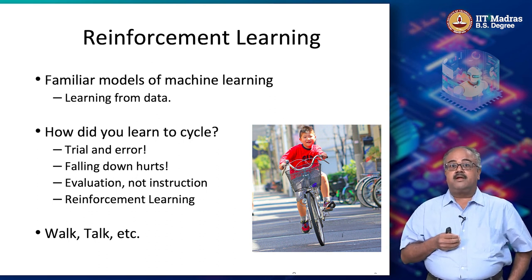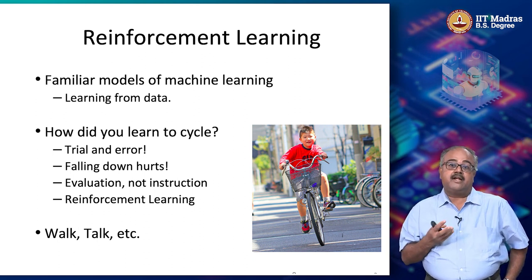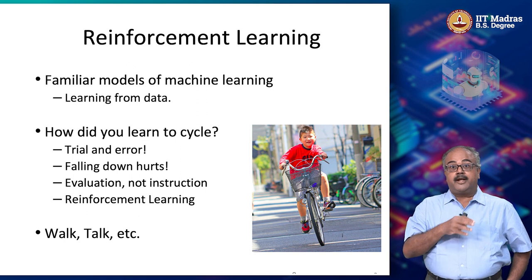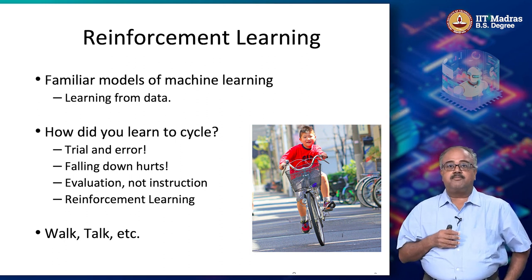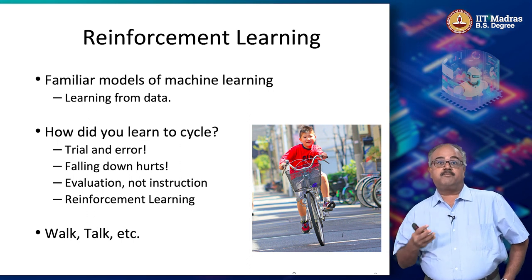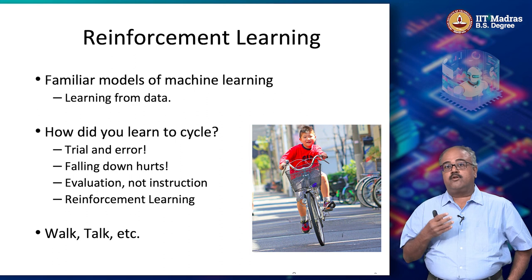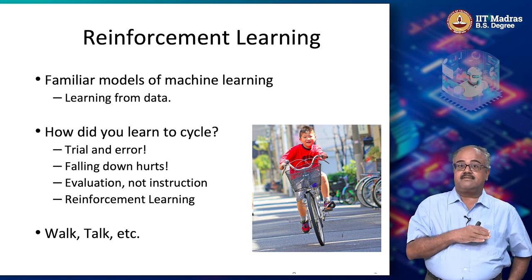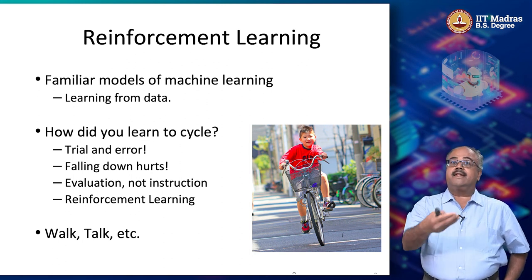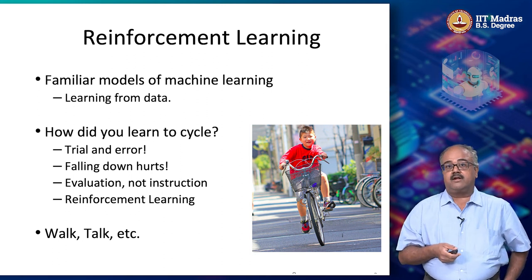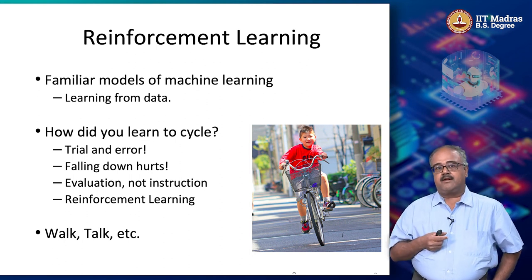Let us say you are cycling — you try to push with your right leg and you fall down, you get hurt, you know that is wrong. But you do not know whether pushing with your left leg is the right answer, because you fell down by pushing with the right leg, or you still have to push with the right leg but lean the other side while pushing. So you have to try different things before you get the right evaluation, and then you can continue learning through this kind of trial and error mechanism.